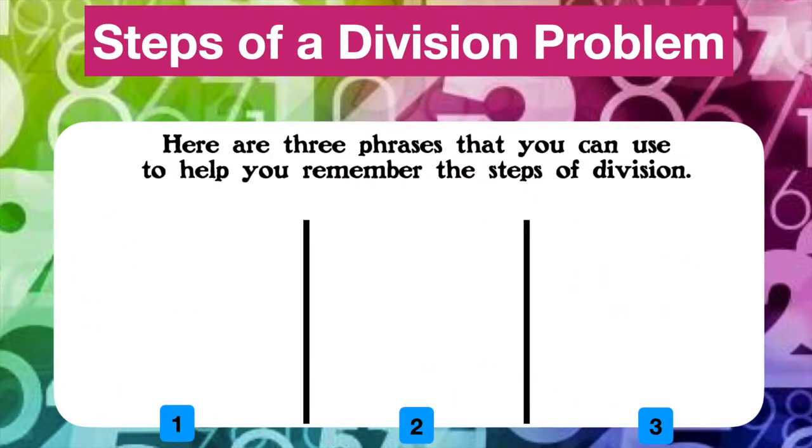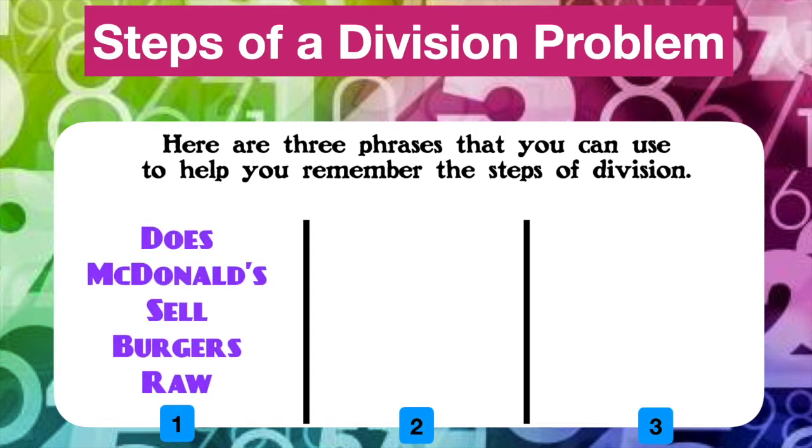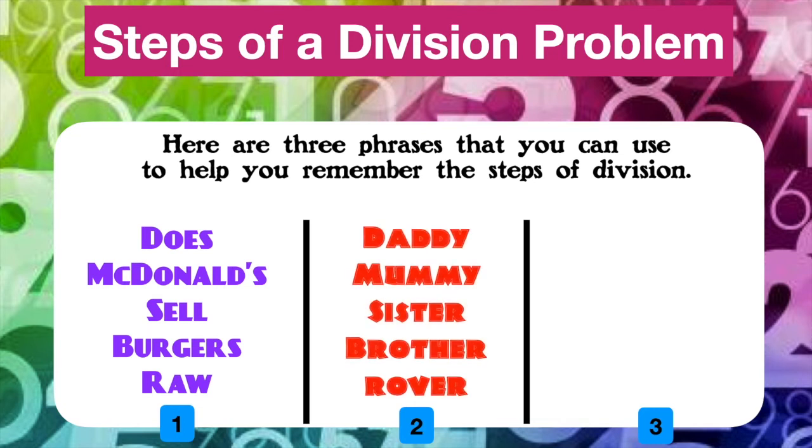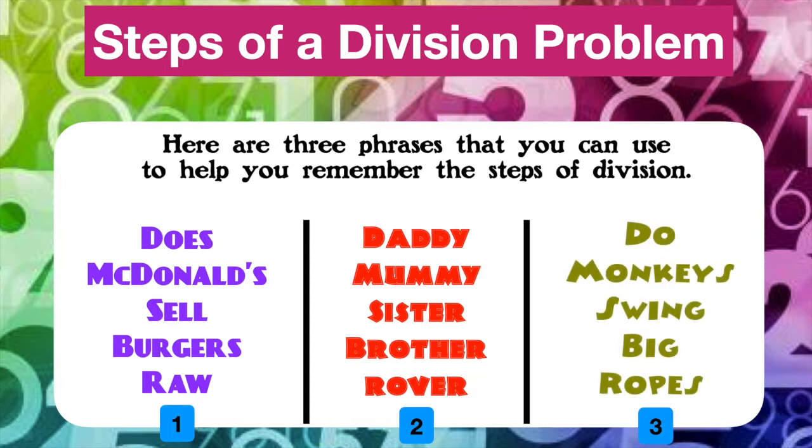Here are three phrases that you can use to help you remember the steps of division. Let's look at phrase number one: Does McDonald's sell burgers raw? Phrase number two: Daddy, mummy, sister, brother, rover. Or phrase number three: Do monkeys swing big ropes? Each word represents the steps of division: divide, multiply, subtract, bring down, and repeat.